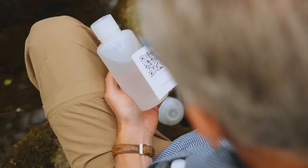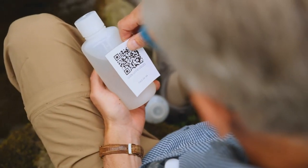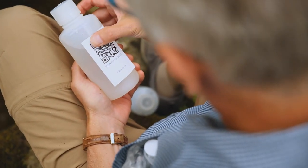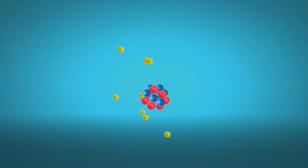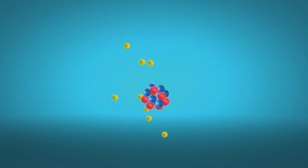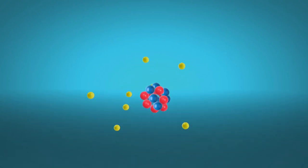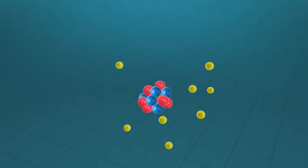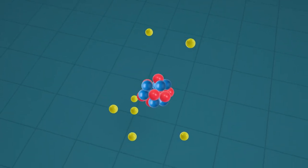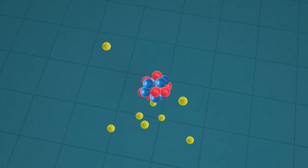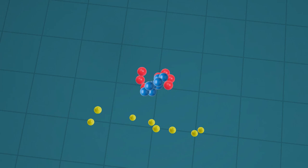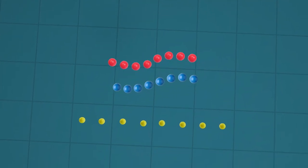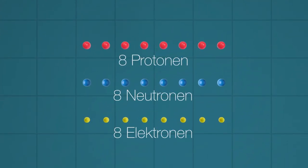Was sind nun diese Isotope, die im Zentrum dieser Forschung stehen? Atome, die Bausteine der chemischen Elemente, bestehen aus drei Sorten kleiner Teilchen: Elektronen, in gelb dargestellt, bewegen sich um einen Kern, der aus Protonen in rot und Neutronen in blau besteht.